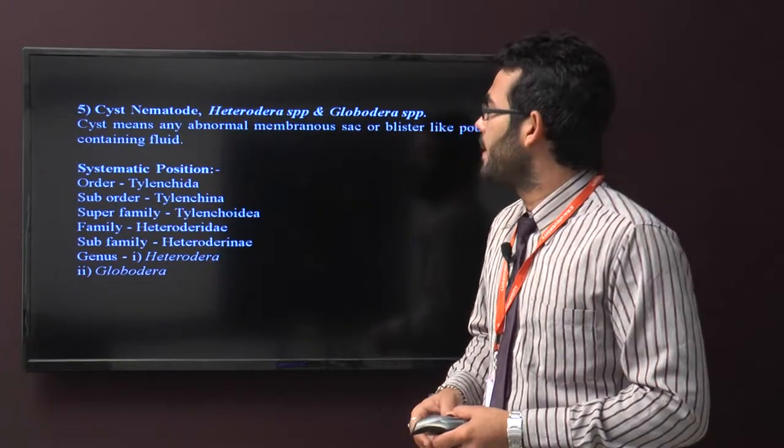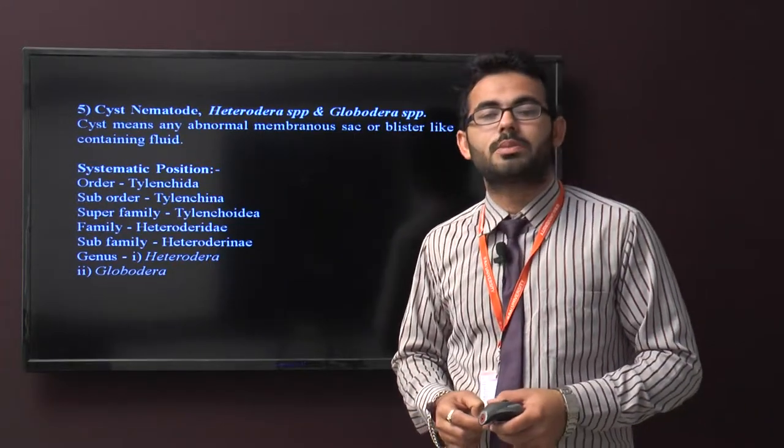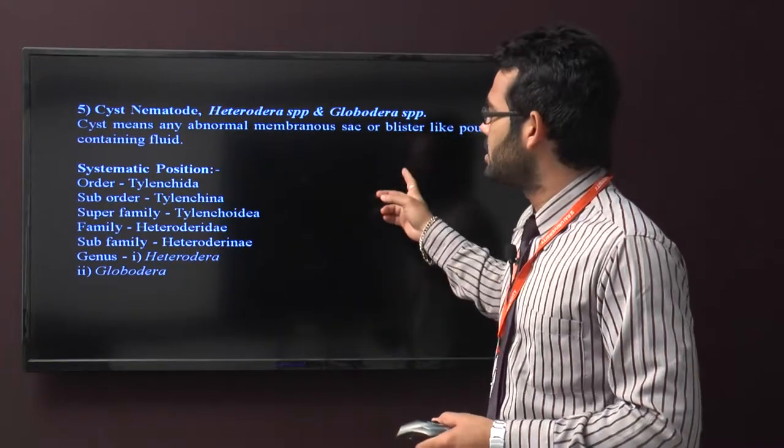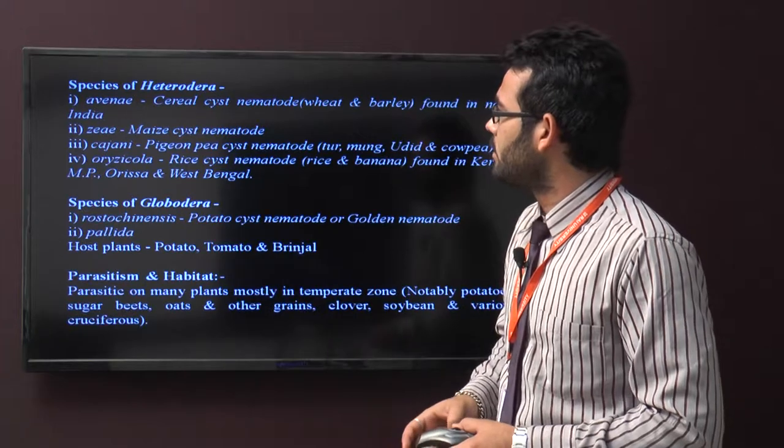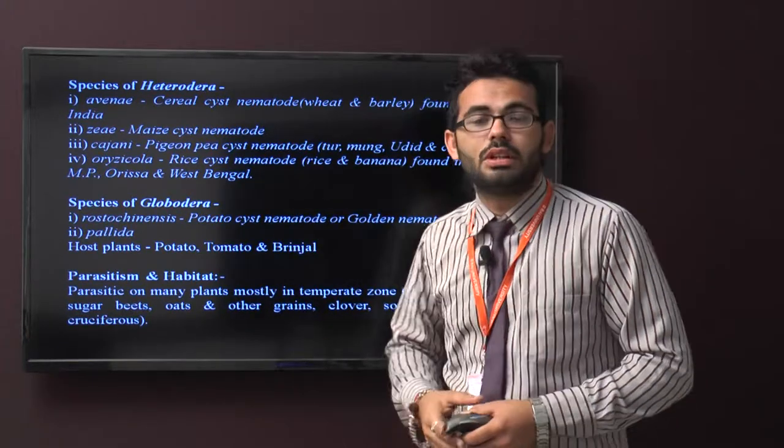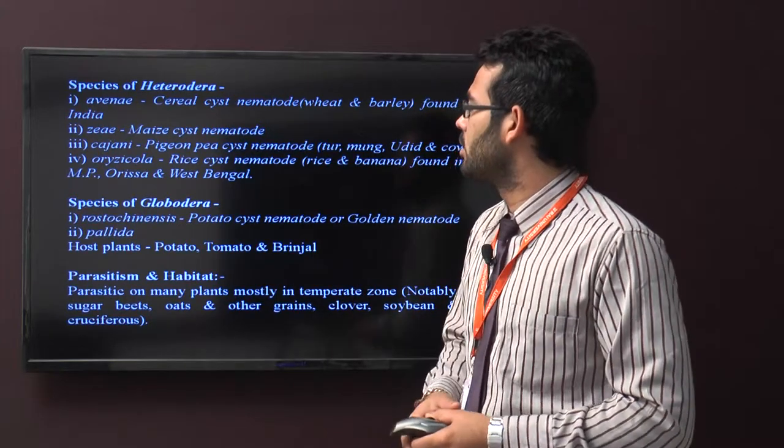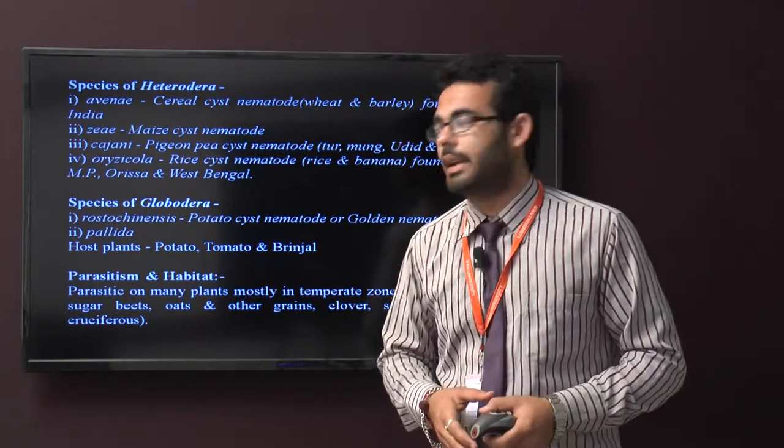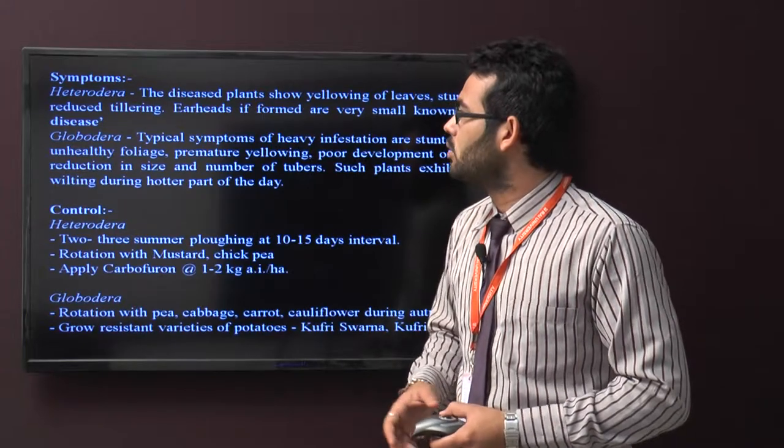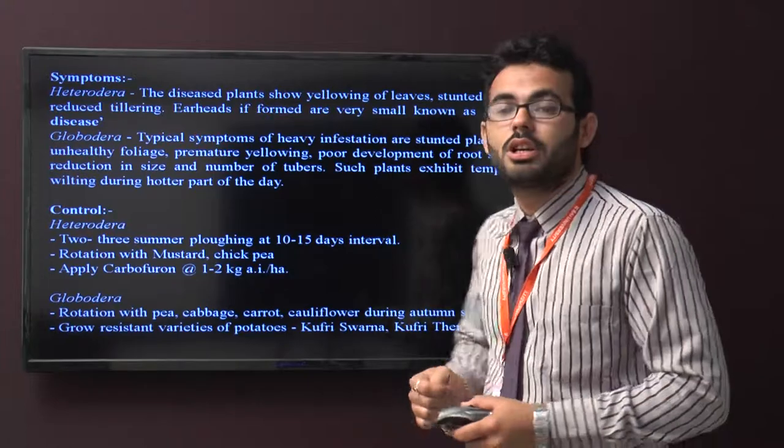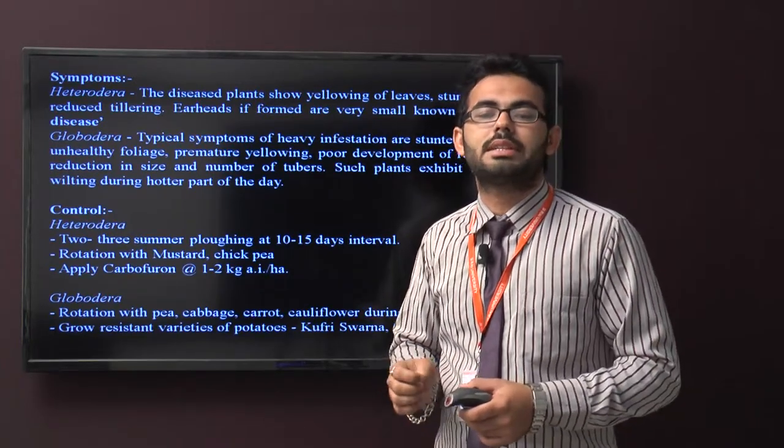Fifth is cyst nematode, scientific name Heterodera species and Globodera species. These are two different species. Species of Globodera include rostochiensis and pallida. Symptoms include slow yellowing of leaves, stunted growth, and causing molya disease.